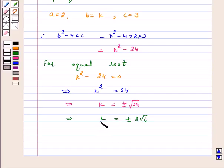Hence, for k = ±2√6, the given quadratic equation has equal roots. Therefore, k = ±2√6 is your answer.